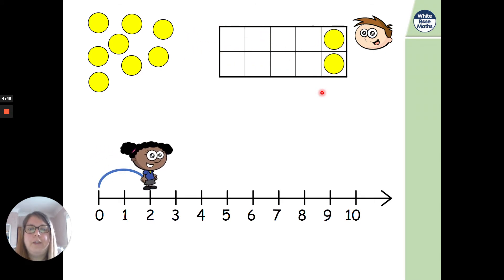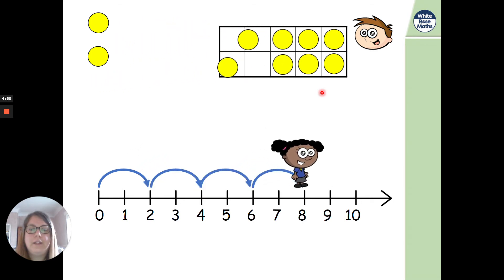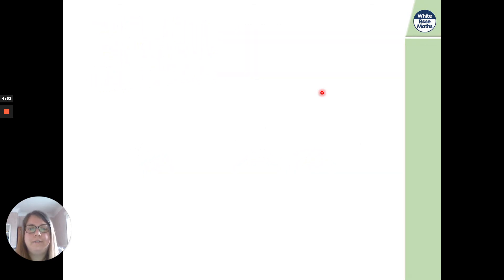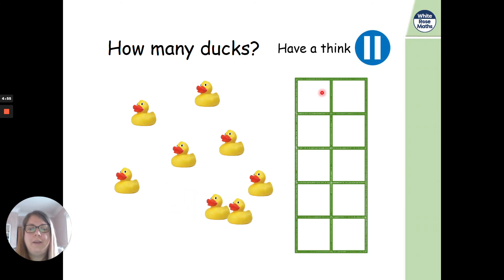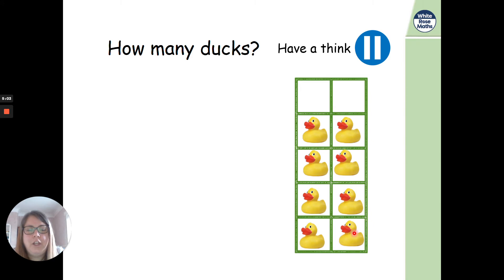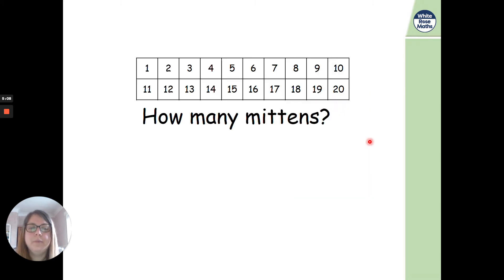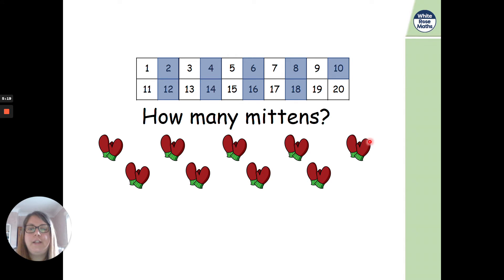So lots of things we can count in twos there. So this time we're going to count in twos using our tens frame. 2, 4, 6, 8, 10. Perfect. How many ducks then this time? How many there are? 8, aren't there? 2, 4, 6, 8. So we can use the tens frame to help us. What about how many mittens there are already? 2, 4, 6, 8, 10, 12, 14, 16, 18, 20. Twenty mittens.